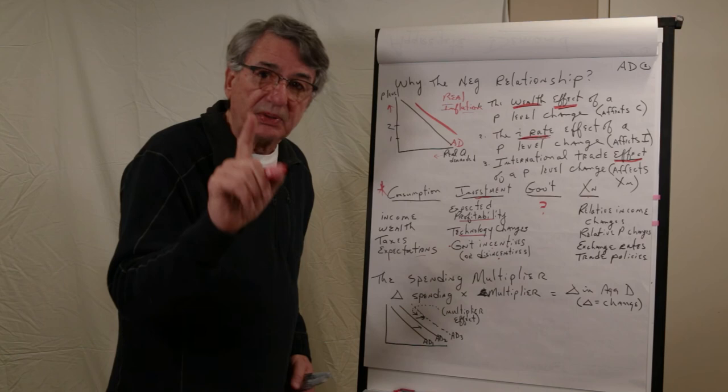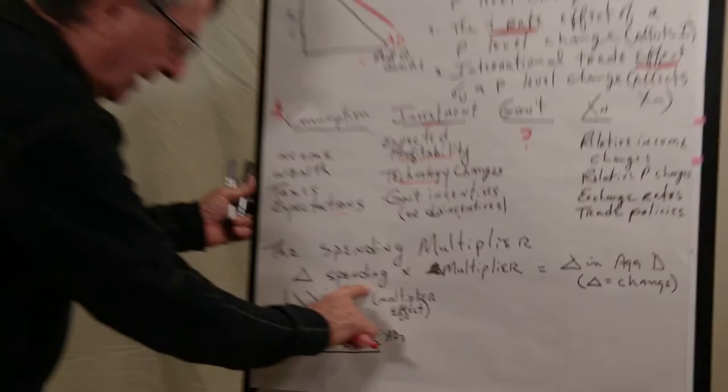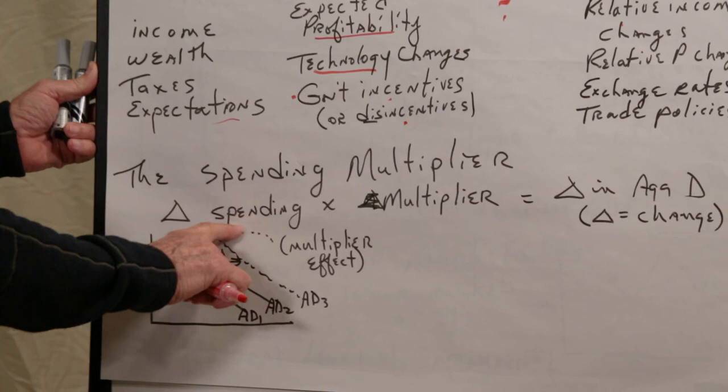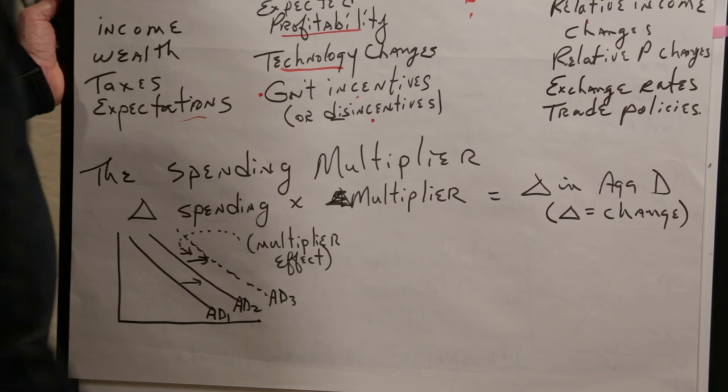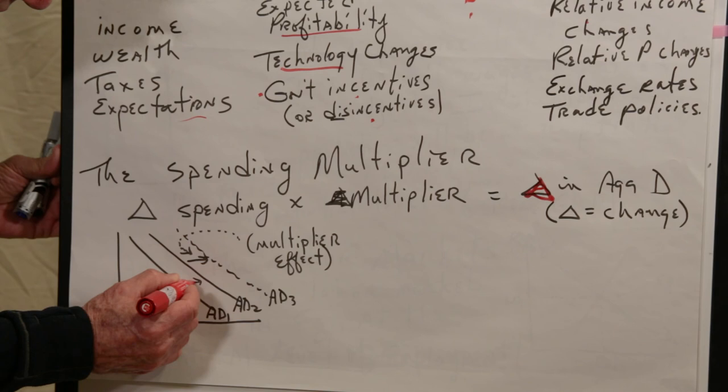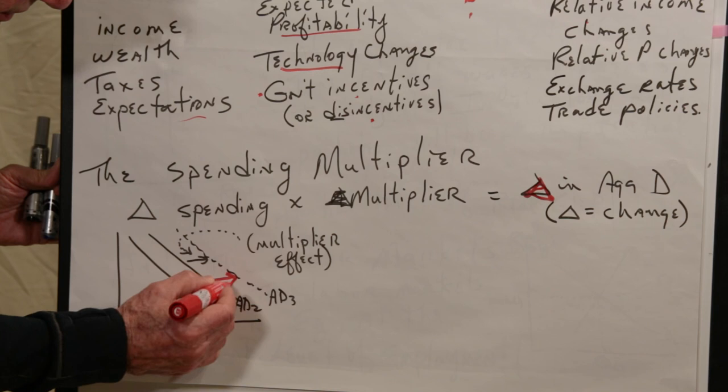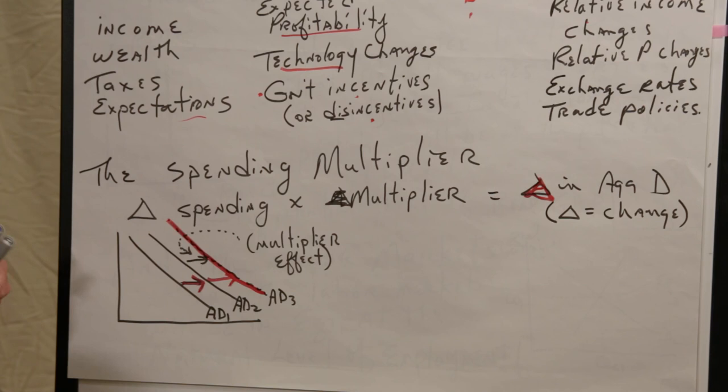And so a dollar of new spending will have some multiple effect on aggregate demand. And the relationship is a change in spending. In my example, I said a change of $10,000 times the multiplier will equal the effect, the change in aggregate demand. And this delta, delta means change. It's a lazy man's way of writing change. So in this little diagram, I have this initial change in aggregate demand. There's the shift. But then if we let the multiplier effect run, then we end up with the final effect on aggregate demand out here.